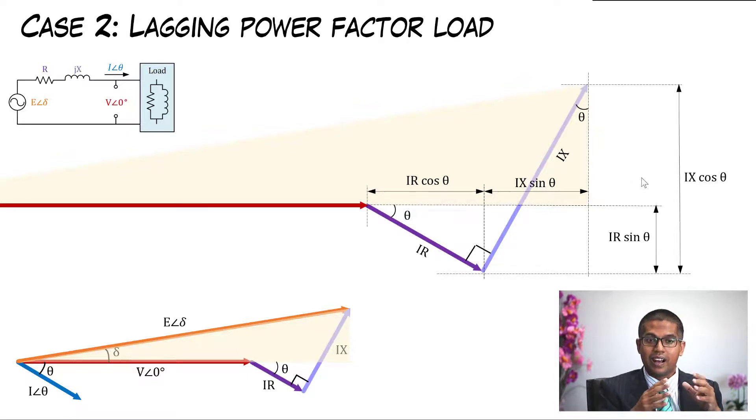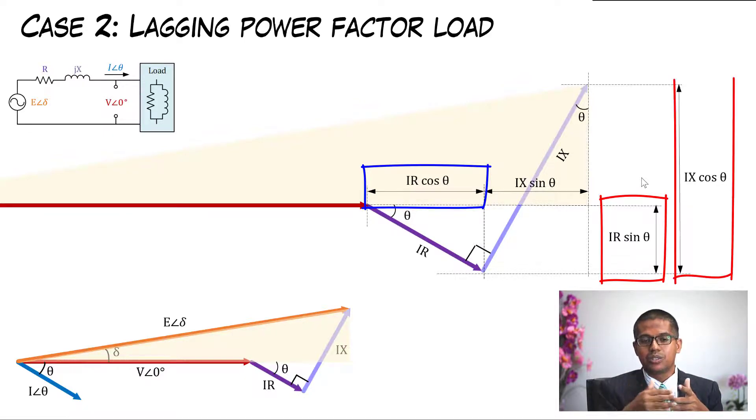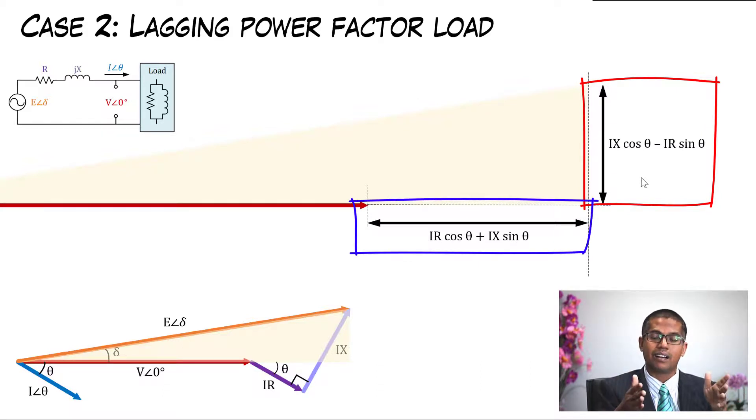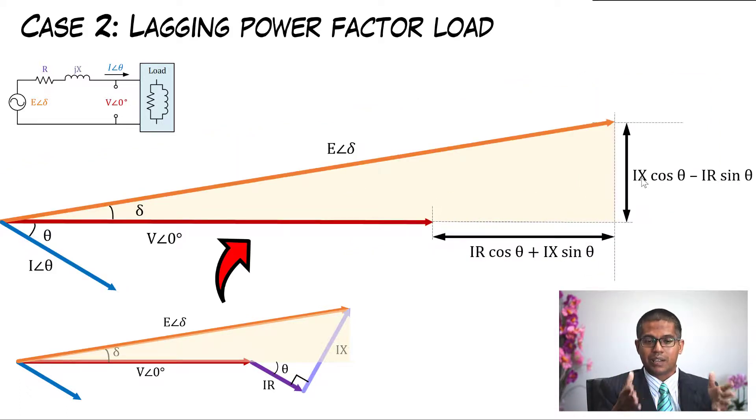So IR, we can extract the vertical information of IR become IR sine theta, and the horizontal element of IR at IR cos theta. Same goes to IX. So you will get these four information. If I eliminate all that, you can see that the vertical part becomes IX cos theta minus IR sine theta, and the horizontal part becomes IR cos theta plus IX sine theta. When I zoom out, it becomes like this.